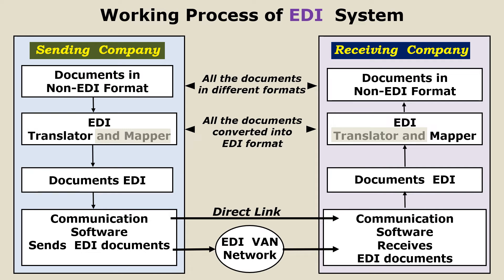So the sending company has documents in non-EDI format. They are translated and, using communication software, are sent to the other company using either a direct link or the EDI VAN network. The communication software at the receiving company receives the documents, and the EDI mapper converts them from standard EDI format into the non-EDI format required by the receiving company.